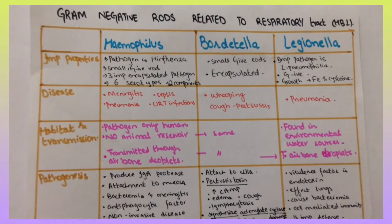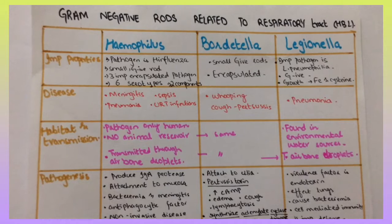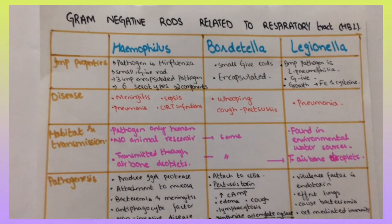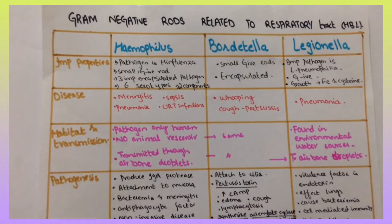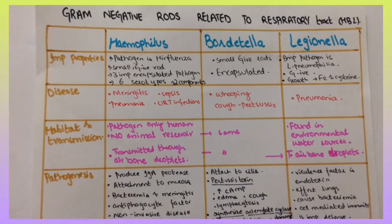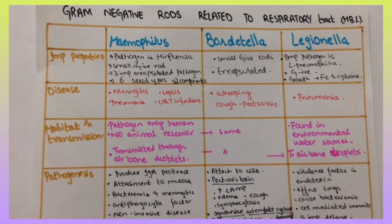Haemophilus pathogen is human only, no animal reservoir, transmitted through airborne droplets. Same goes for Bordetella. Legionella is found in environmental water sources, transmitted through airborne droplets.